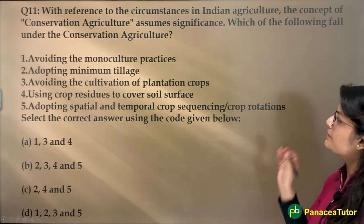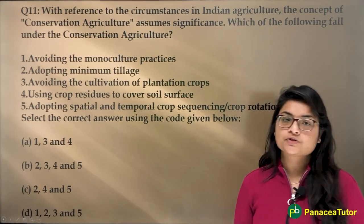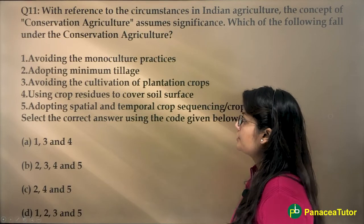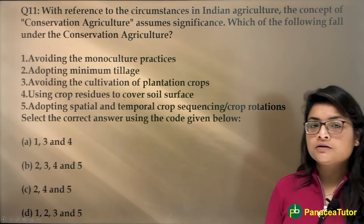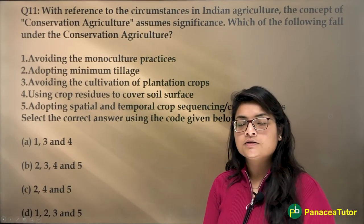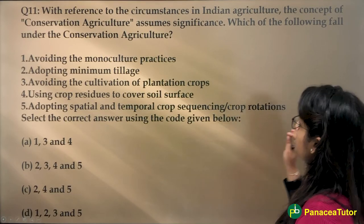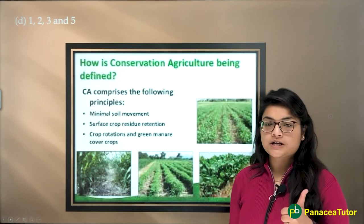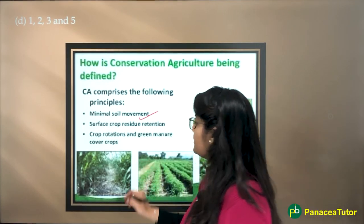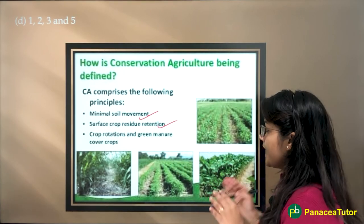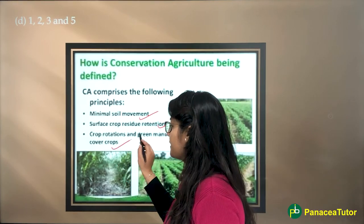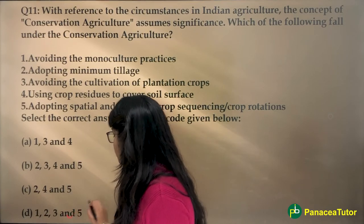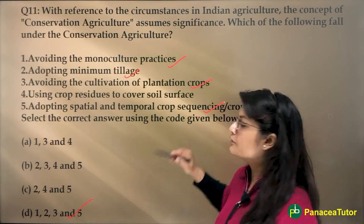With reference to Indian agriculture, 70 percent of the population is dependent on agriculture, so expect many questions on this topic. This question is on conservation agriculture. Conservation agriculture comprises minimal soil movement, surface crop residue retention, crop rotations, and green manure cover crops. The correct answer includes options one, two, three, and five.